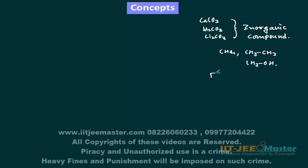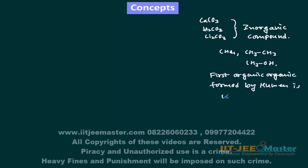The first organic compound formed by a human in the laboratory is urea. By heating ammonium cyanate we get urea. Although in urea, carbon is not directly attached to hydrogen, it is still an organic compound. So in organic chemistry we study about those compounds of carbon which do not come in the list of inorganic compounds.